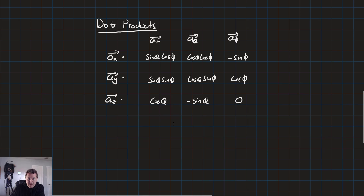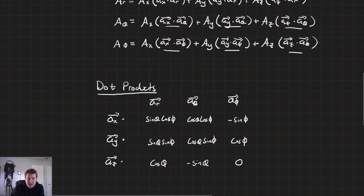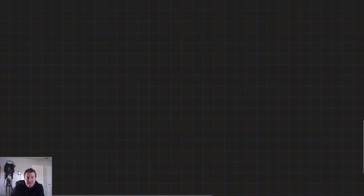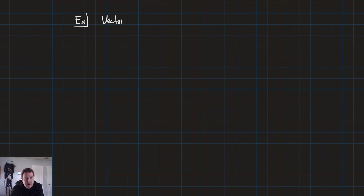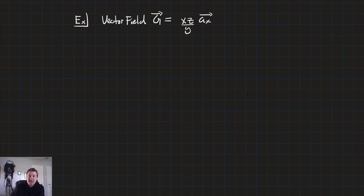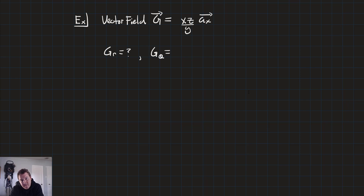So there are our dot products. Combined with our vector transforms and point transforms, we've got everything we need to convert from rectangular coordinates to spherical coordinates. Let's go ahead and work out an example. Suppose we have a vector field g equal to (xz over y) times the x-component unit vector, and we want to convert that to spherical coordinates. We need to find g sub r, g sub theta, and g sub phi.